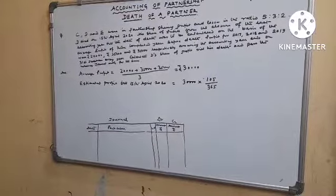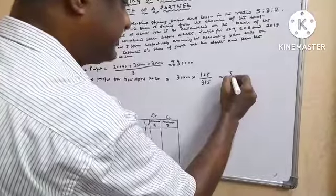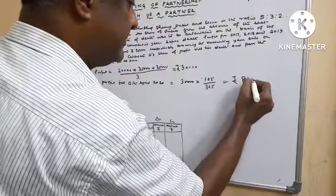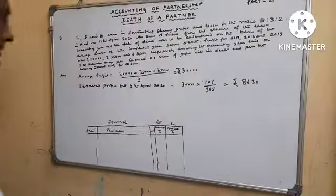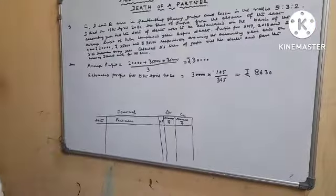Equals to how much? Equals to 8,630. So estimated profit equals Rs. 8,630.